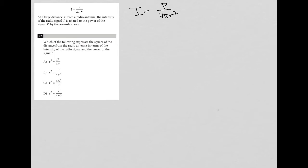So this is really just a formula relating radius or distance, intensity and power. Question 22 says, which of the following expresses the square of the distance? So that's r squared.